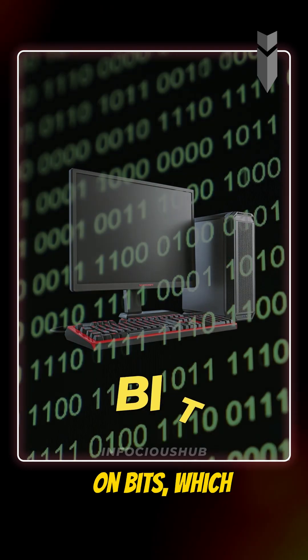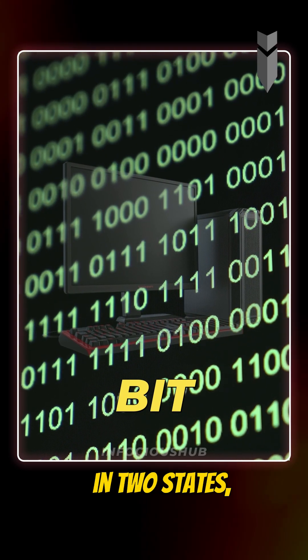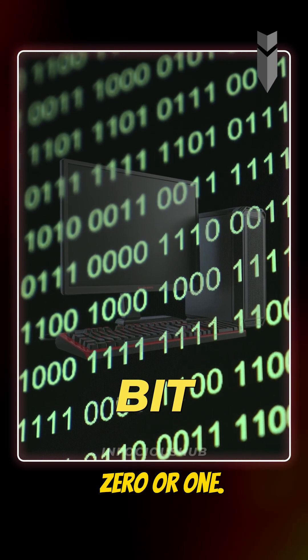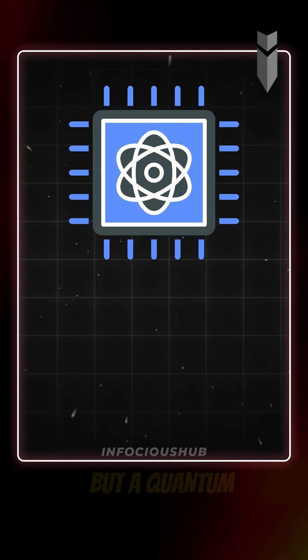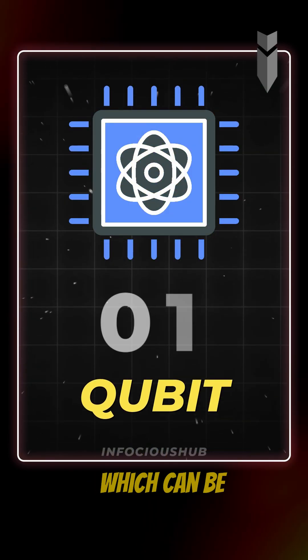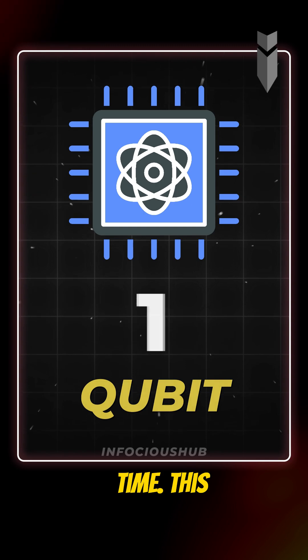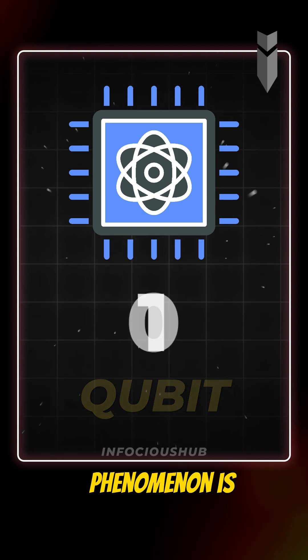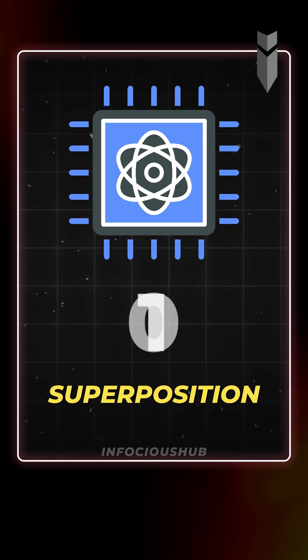A normal computer runs on bits, which can only exist in two states, zero or one. But a quantum computer runs on qubits, which can be zero and one at the same time. This phenomenon is called superposition.